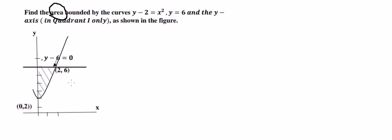So they have the graph. We have y minus 2 equals x to the power of 2, and y equals 6. So this one is about the line, and this one is about the curve.